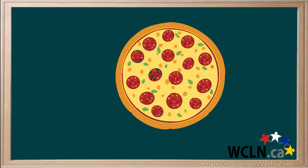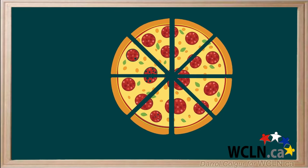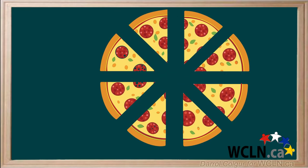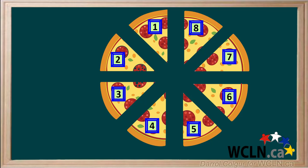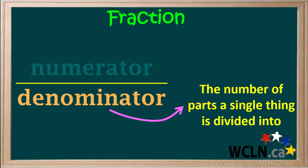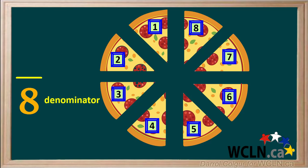Let's start with one full pizza again. This time, we'll cut it up into smaller pieces. If we number these pieces, we see we now have eight pieces. The denominator is the number of parts a single thing is divided into. So we can write a fraction in which the denominator is eight.